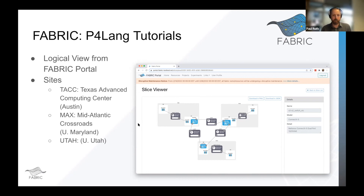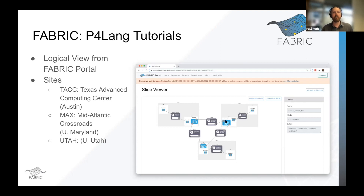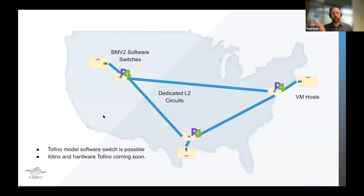Here's a view of a slice I ran over the weekend. The big gray boxes are each a different site — MAX, which is the University of Maryland Mid-Atlantic Crossroads; TACC, the Texas Advanced Computing Center in Austin; and Utah, the University of Utah. At each site there is a white box node with the BMv2 software switch in it, another white box which is the host, connected locally within the gray box, and also connected to each other with wide-area network links going between Texas, Maryland, and Utah in a triangle.